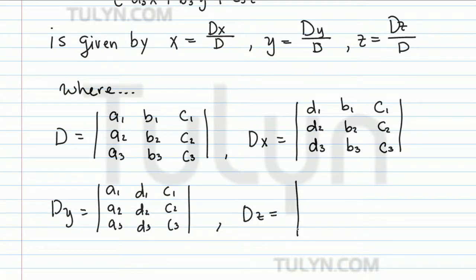for Dz, you will probably not be very surprised to know that you write the coefficients of x and y as usual. But now you replace the coefficients of z, which are c1, c2, c3, by the constant terms. So you write d1, d2, d3 as your last column.